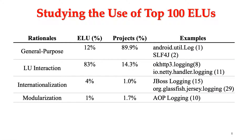The table here shows the four rationales behind the use of external LUs: general purpose, LU interaction, internationalization, and modulization. In the second column, we show the percentage of external LUs for each rationale. In the third column, we show the percentage of projects that use these LUs. In the last column, we show a few examples. Due to time constraints, I will only go into details about LU interaction and internationalization, as general purpose logging was already illustrated with log4j, and modulization is mainly implemented using an aspect-oriented programming mechanism.